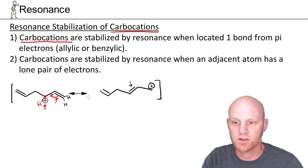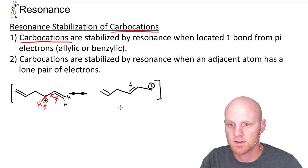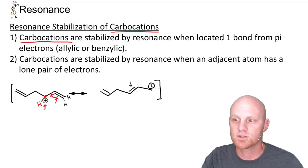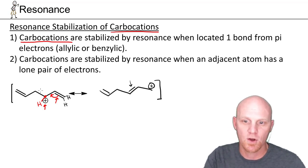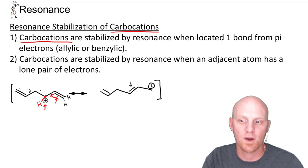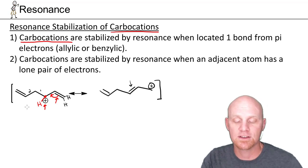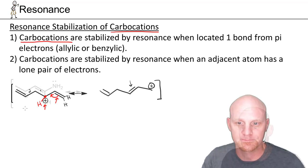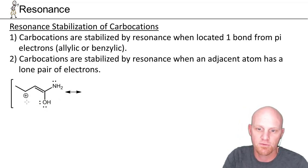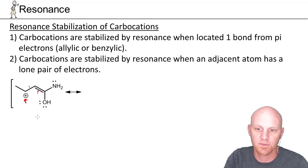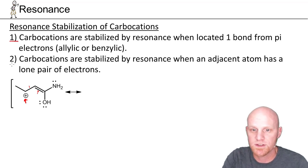Our two resonance structures are connected with a double-headed arrow, and we can see the positive charge is shared between two carbons. Note that if from the beginning the carbocation was two bonds away from pi electrons, those will not be involved in resonance at all — it has to be exactly one bond away. Here's another carbocation where our carbocation is exactly one bond away from the pi electrons in the double bond, so we should definitely expect resonance.